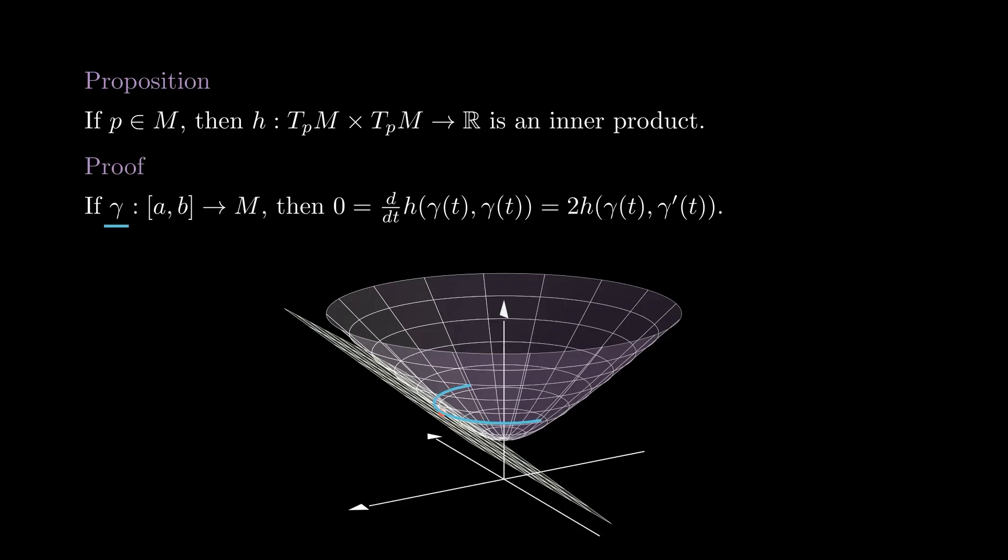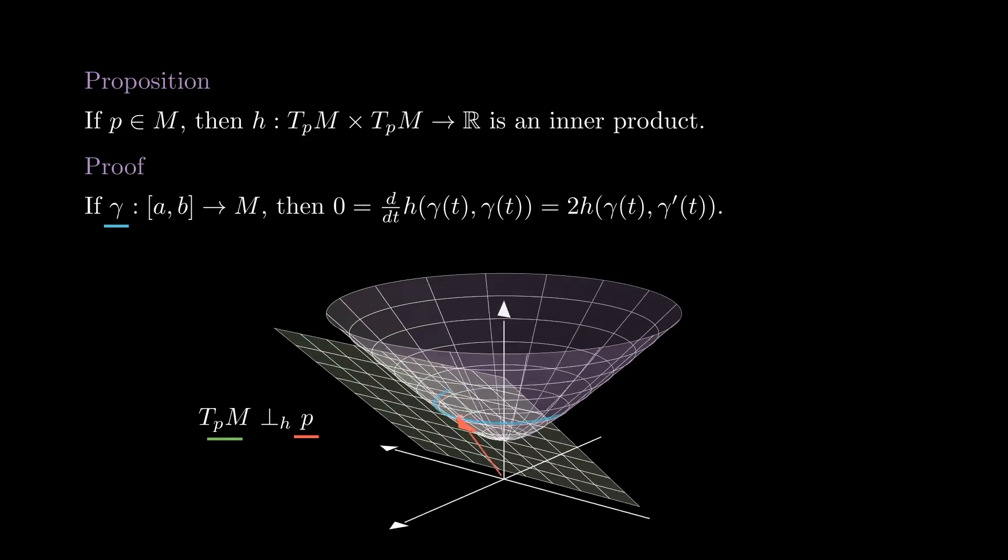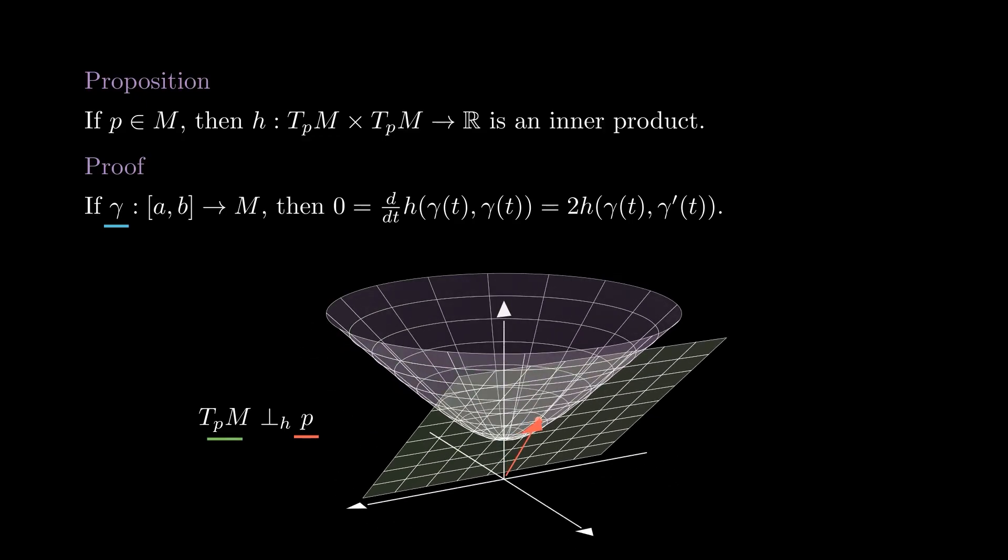so if we take the derivative and apply the product rule, we get that gamma prime is perpendicular to gamma with respect to h. When we consider the curves gamma that pass through p at time zero, this shows that the entire tangent space at p is perpendicular to p with respect to h.